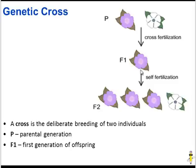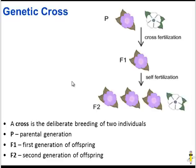Then he took these F1 offspring and had them self-fertilize. This is something plants can do because most plants have male and female reproductive organs. When these purple plants fertilized themselves, they had offspring known as the F2 generation — the second generation of offspring. This time Mendel noticed that most of the plants were purple, but a few of them were white, which led him to questions about how inheritance works.